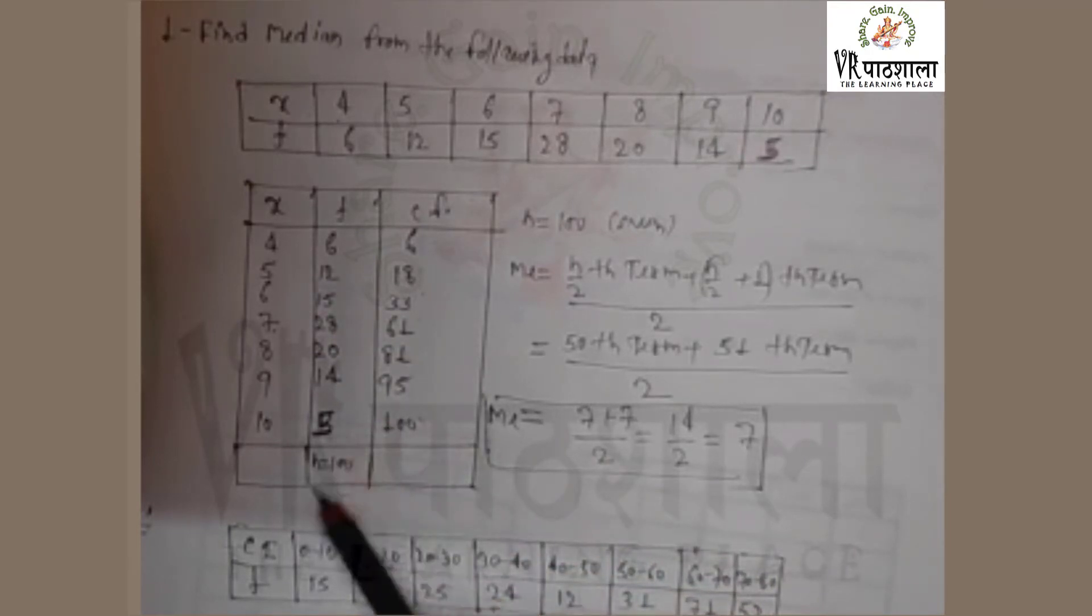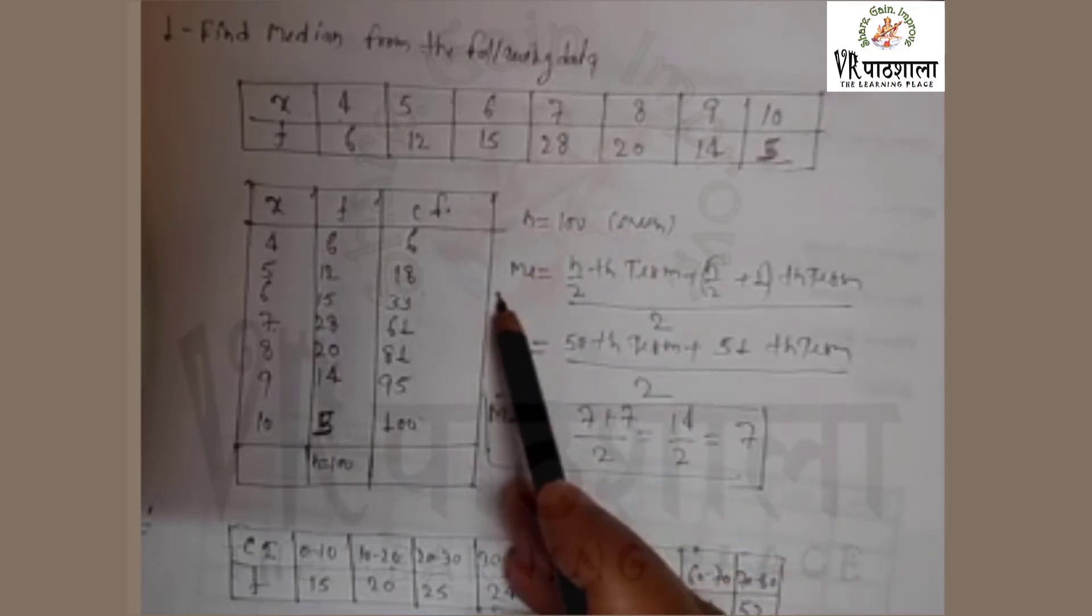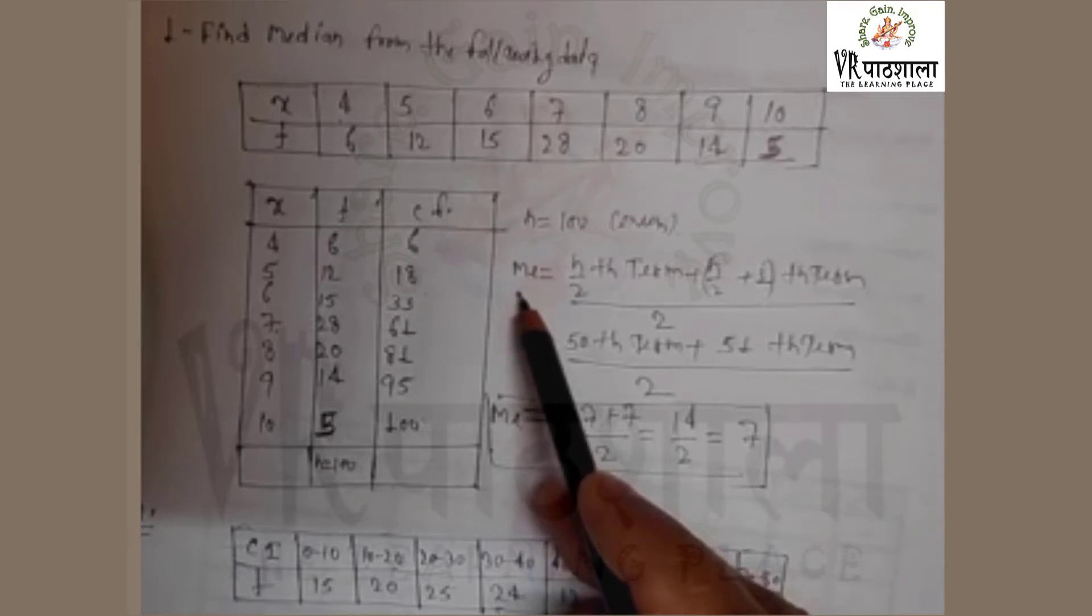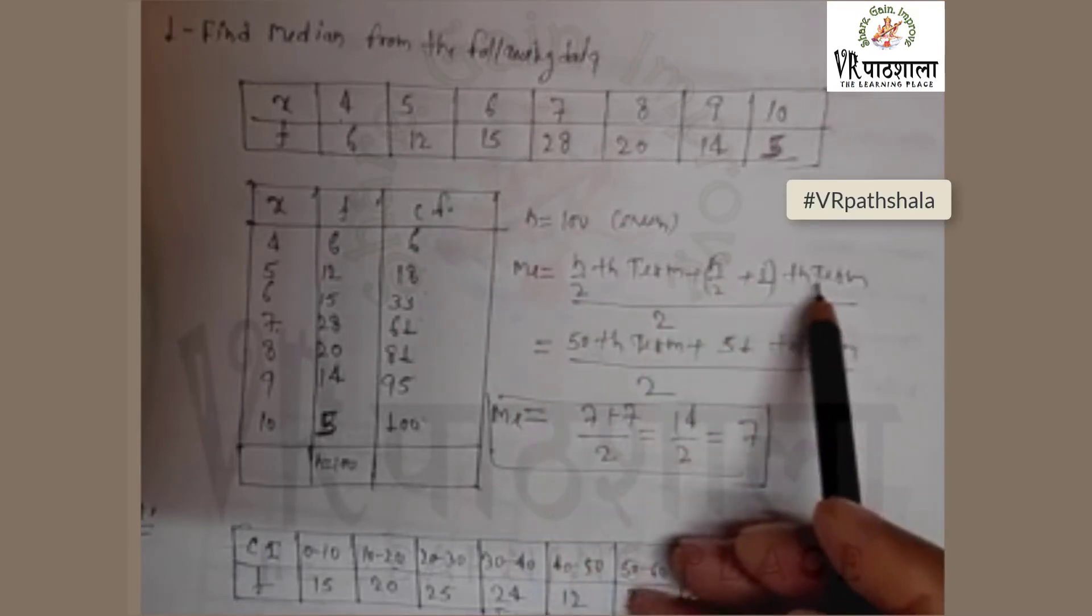Now the n is 100, n is even. So we apply the formula of ungrouped data when n is even: n by 2th term plus n by 2 plus 1th term.